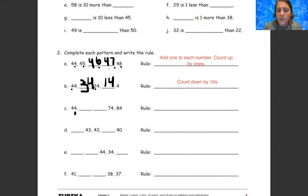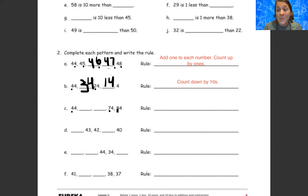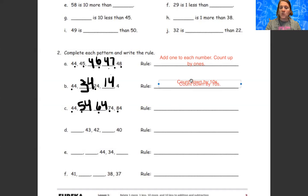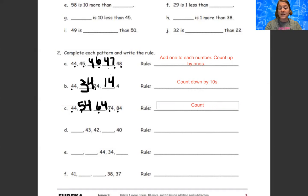Now C: we have 44, blank, blank, 74, 84. The tens place value is again changing — we had four, blank, blank, seven, eight. This time it's going up by tens. So we have 44, then 54, then 64, then 74, then 84. See how the tens place value went up by one group each time. Our rule is count up by tens.